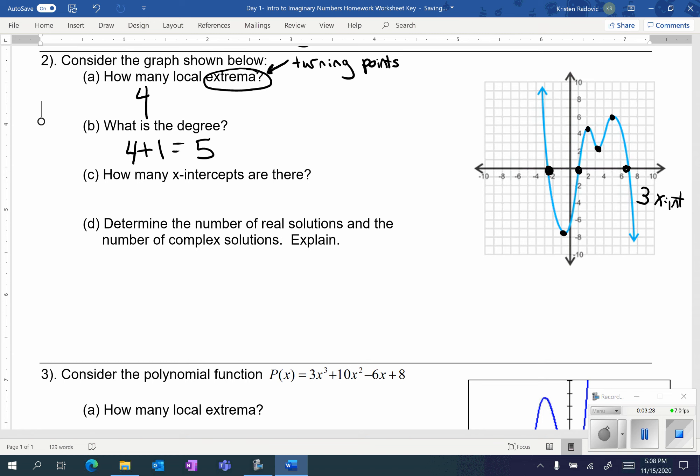If we have three x-intercepts, that helps us with knowing how many real solutions and how many complex solutions there are. So we have five total because that's the degree, minus the three real that we have, which is going to give me two imaginary.